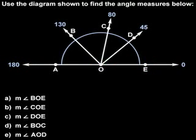Remember that in the previous section, we used a number line to assign lengths to segments. In this section, we'll be using a protractor to assign measures to angles. Notice that a protractor uses measures of 0 to 180 degrees.